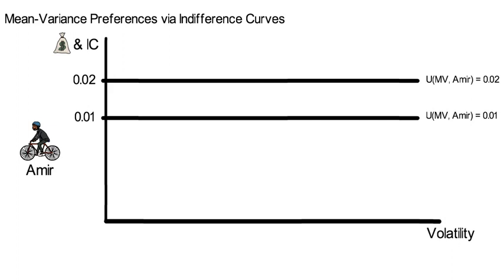Well, risk neutral preferences are a rare phenomenon among individuals. Research identifies that individuals have a risk aversion of somewhere between 1 and 20. So let's pick another person, say Pauline.